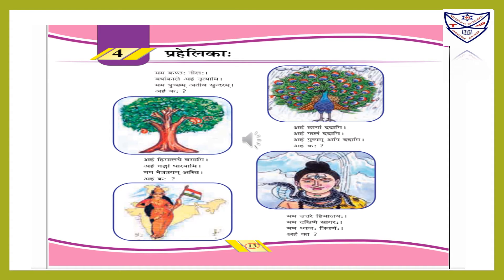Now, aham chayam dadami means I give shade, aham falam dadami means I give fruit, aham puspam api dadami means I give flowers also. Who am I? Aham kaha? Let's guess — yes, it is a tree! A tree gives us shade, fruits, and flowers.